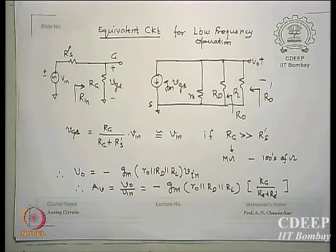Capacitors CC1, CC2, and CE (or Cs) are chosen to act as short circuits for AC signals and open circuits for DC. This avoids the need to include them in the small-signal analysis at low frequencies. Frequency response — where these capacitors matter — is the next topic.